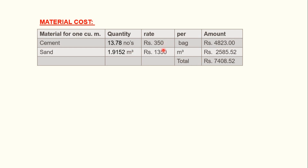In the third column write the market rate of material. I am taking cement rate as 350 rupees per bag and sand rate as 1350 rupees per cubic meter. These rates are not fixed and may vary by location. Multiplying rate by quantity: cement costs 13.78 × 350 = 4823 rupees, and sand costs 1.9152 × 1350 = 2585.52 rupees.